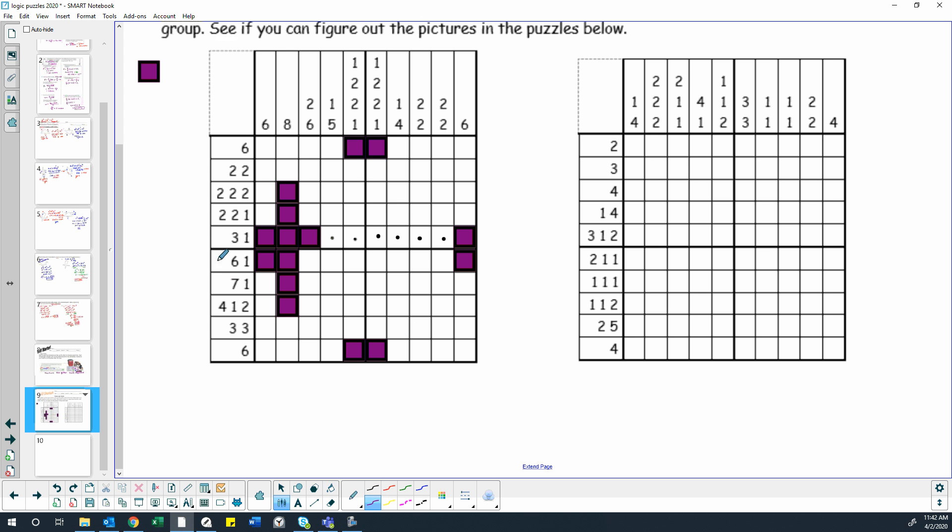With that, we are actually done with this row. So I'm going to put a check mark there because that row is finished. Now we can go to the next row, the six and the one. We already know we have our one finished here.